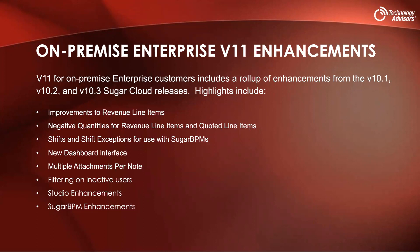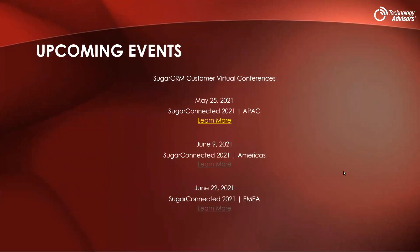We have links to the release notes for each of these if you want to read them in more detail. There's also an upcoming event: Sugar Connected 2021, a virtual customer conference with a roadmap presentation, cool presentations, and a great guest speaker. There are three regional sessions — most of our customers will be in the Americas, so June 9th. We'll be sending out a link with more information; definitely suggest attending — it's free.